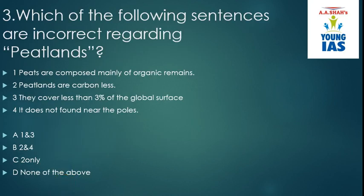The next question asks which sentences are incorrect regarding peat lands. Peat is a kind of soft coal, and lands that consist of it in large amounts are called peat lands. Peats are composed mainly of organic remains — correct; they consist of a mixture of plant materials, insects and animal remains. Peat lands are carbon-less — no, they are abundant in carbon, so this is wrong. They cover less than 3% of the global surface — correct. Peat lands are not found near the poles — wrong, they are usually found near the poles. So the correct option is B (statements 2 and 4 are incorrect).